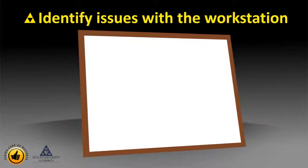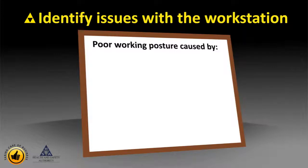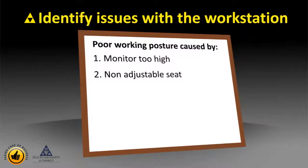These can be documented in a checklist format as identified in the illustration. For example, poor working posture may result from the monitor being set too high. The fact that the seating is non-adjustable doesn't allow the flexibility for the individual to set up the workstation appropriately.